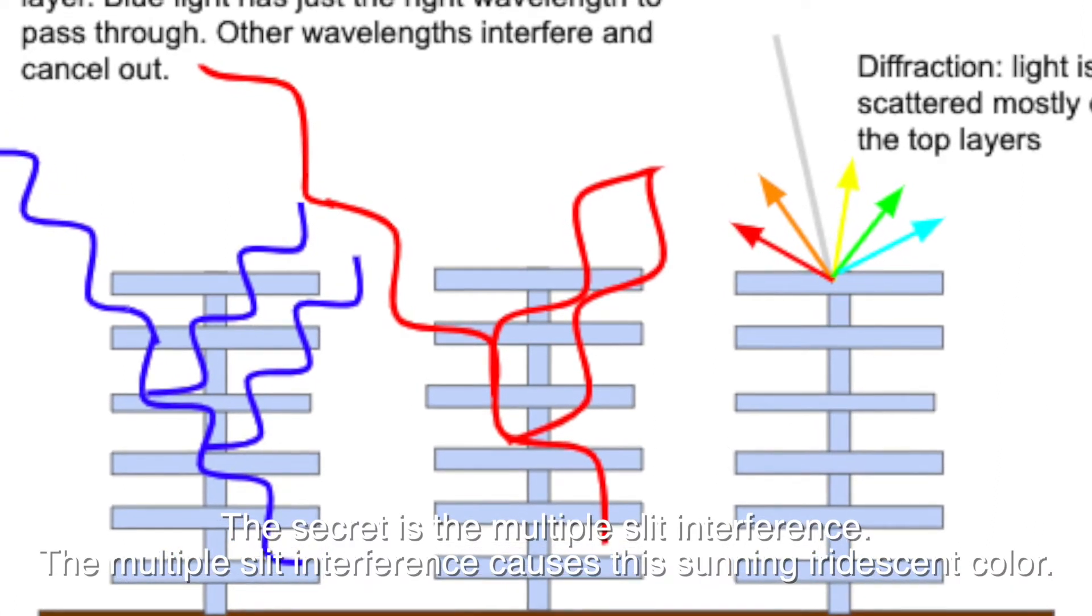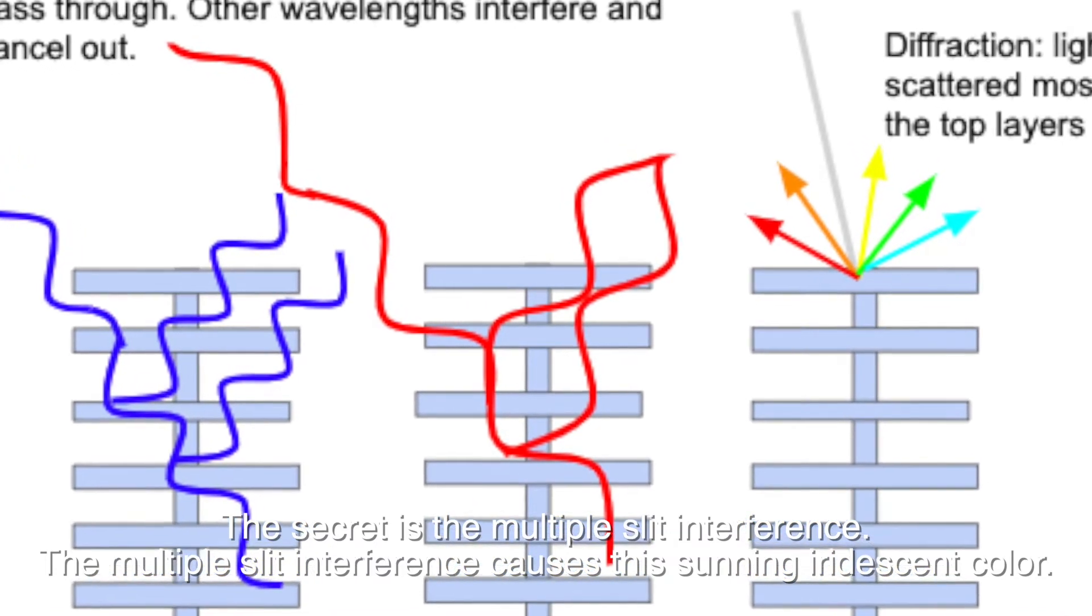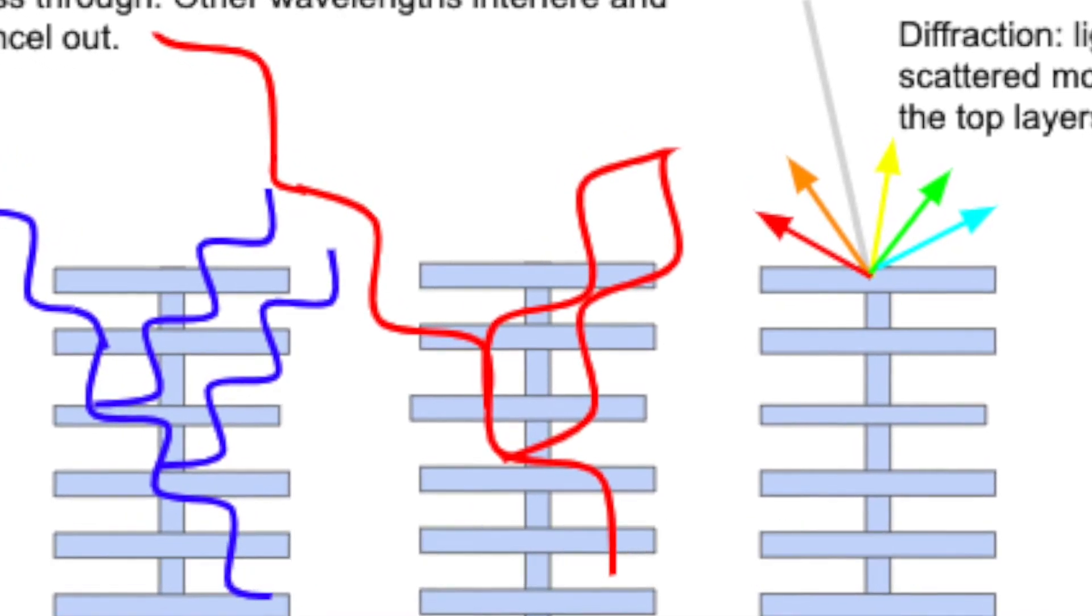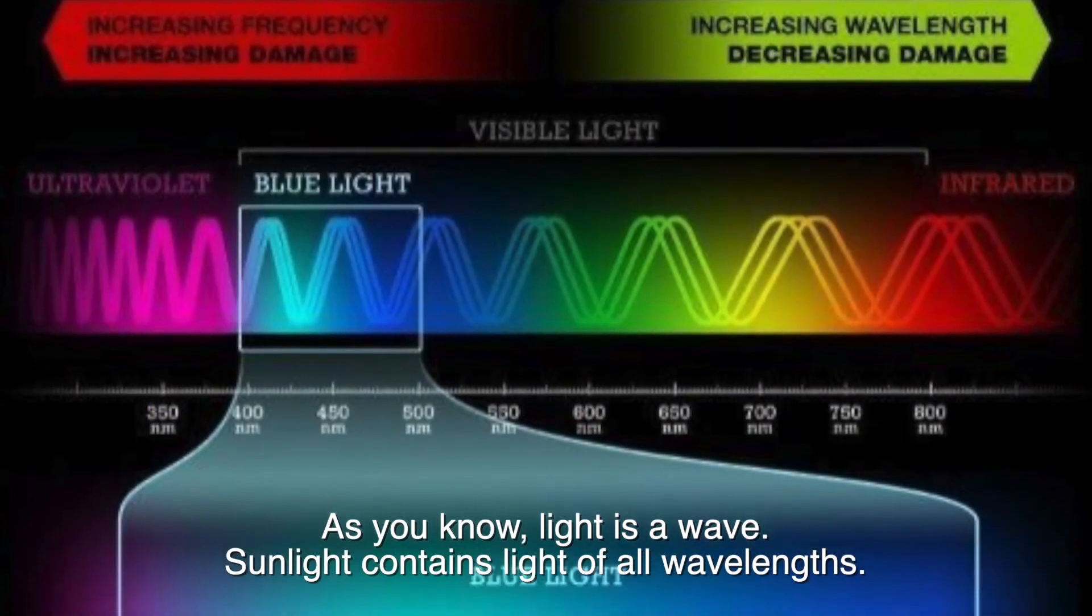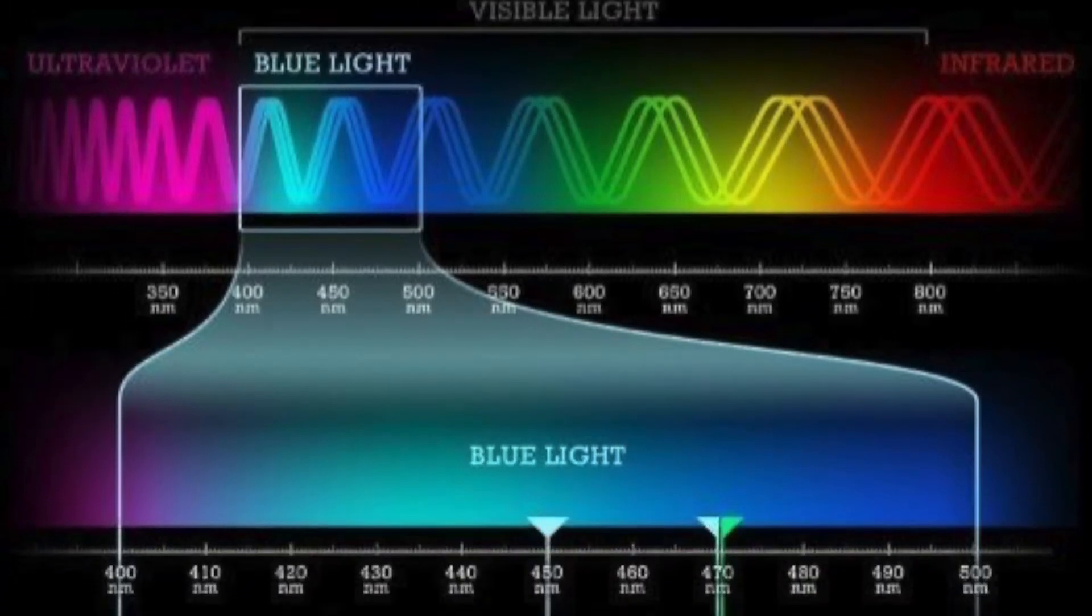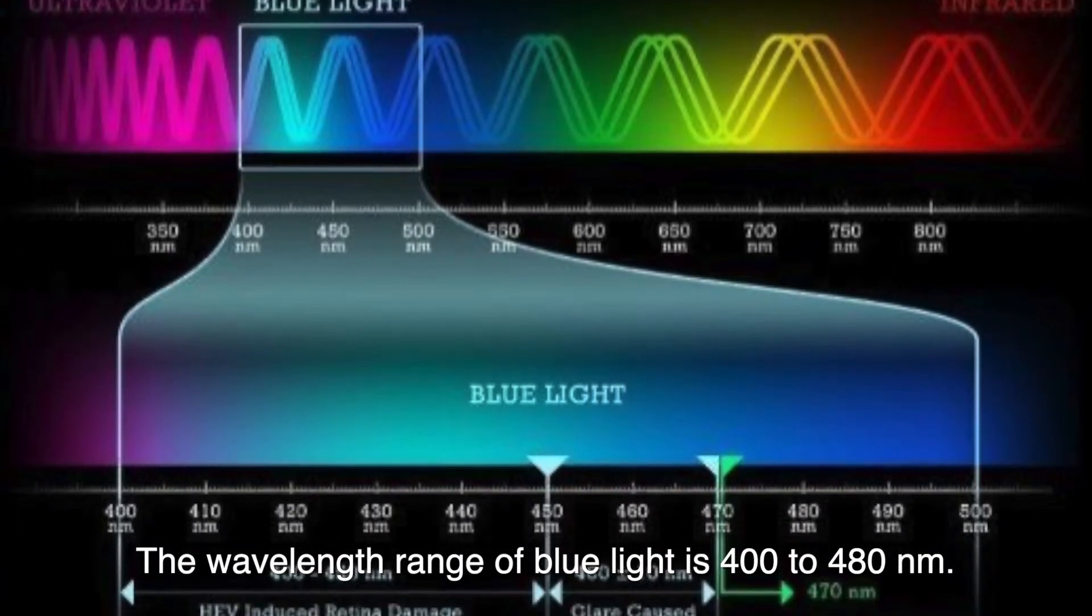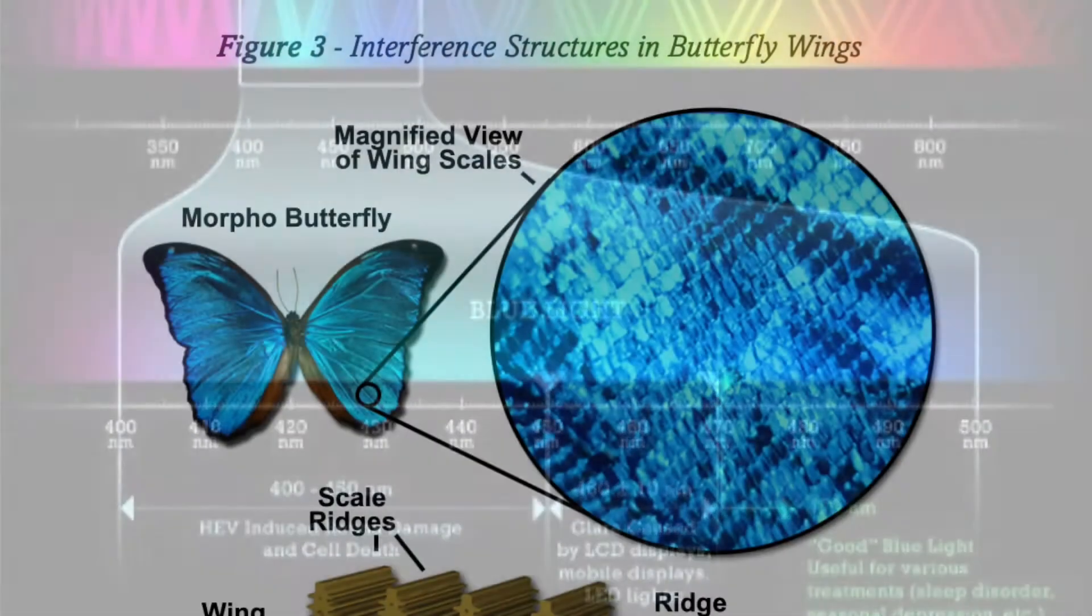the multiple slit interference. The multiple slit interference causes this stunning iridescent color. As you know, light is a wave. Sunlight contains light of all wavelengths. The wavelength range of blue light is 400 to 480 nanometers. The slits are